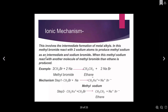The second mechanism is the ionic mechanism. This involves the intermediate formation of methyl sodium. Methyl bromide reacts with two sodium atoms to produce methyl sodium as an intermediate and sodium bromide. When this methyl sodium reacts with another molecule of methyl bromide, ethane is produced. So in step one we have methyl bromide plus sodium forming a methyl sodium ion, and this methyl sodium reacts with methyl bromide to produce ethane.